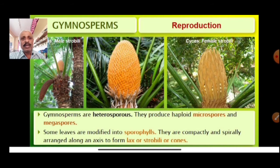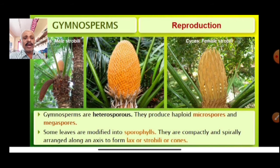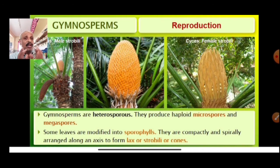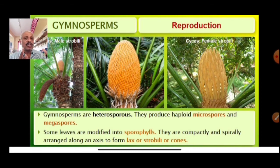Gymnosperms are heterosporous — they produce two different kinds of spores: microspores and megaspores. Some leaves are modified into sporophylls — a sporophyll is a leaf that bears the spores. These sporophylls are compactly and spirally arranged to make a structure called a cone.